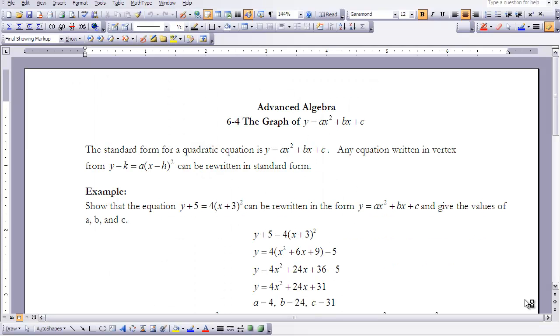This is advanced algebra lesson 6 for the graph of y equals ax squared plus bx plus c. We learned in a previous lesson that the standard form for a quadratic equation is y equals ax squared plus bx plus c. Any equation written in vertex form is y minus k equals a times x minus h squared.